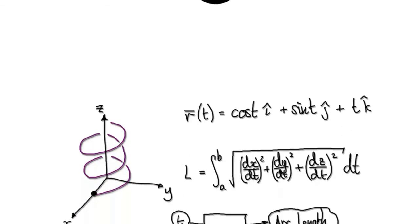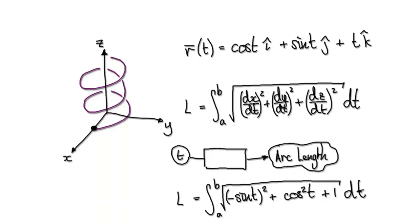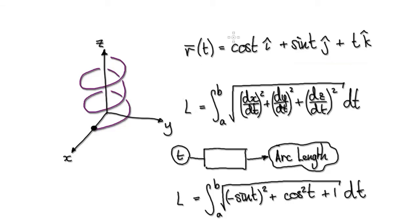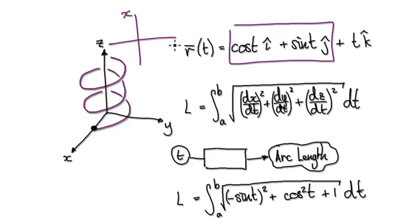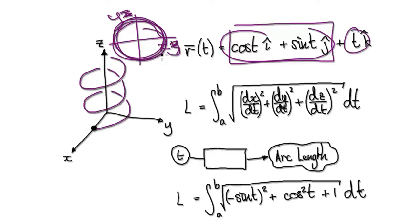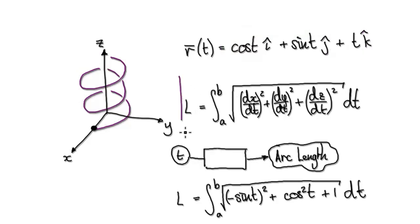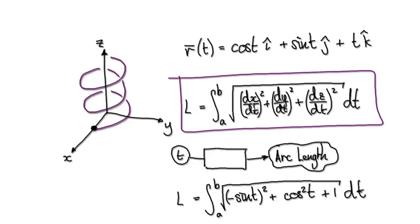So following on from the previous video, let's give you guys an example now. So let's say you've been given this position vector. When you read this, your eyes are zooming to this bit here. On the x, y axis, it's going to move around in circles, and then it's going to gain in height as time goes on. So it's going to give you this. So we've seen that the arc length is given by this formula.